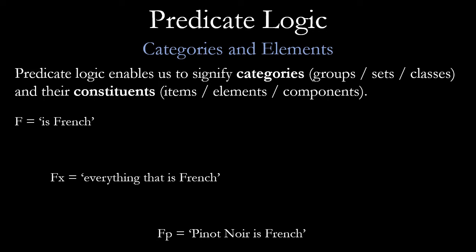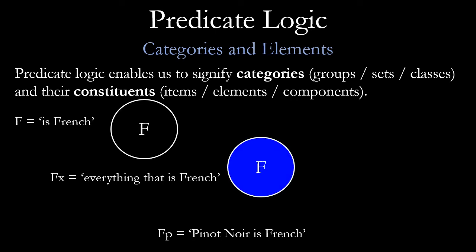We can use Venn diagrams to picture this. If F means 'is French,' then F is like a circle drawn around everything that is French — all things that are French belong in this category. Fx means everything that is French, so we're filling that category. If we have Fp, p is a constant — a specific subject — and we may be referring specifically to Pinot Noir as one item within all things that are French.